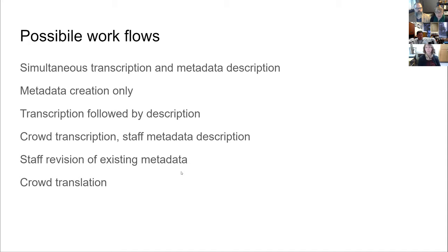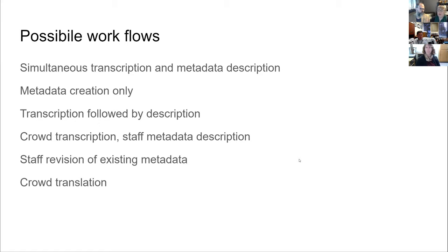Sonia says she can definitely see using this for subject tagging. I think the key is going to be having the right list. The kinds of subject terms the crowd uses are very different from Library of Congress subject headings. That doesn't mean what they provide isn't useful. Ashley Yandel at North Carolina actually wrote her library school thesis on words people use when looking for things in the archives and how those words are really different from words that archivists and librarians use when describing things — for example, 'vintage agriculture pictures' versus the professional terms.